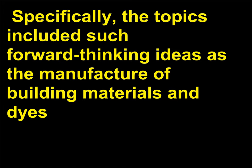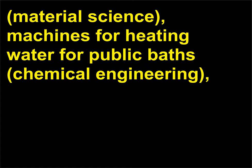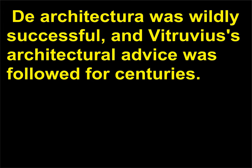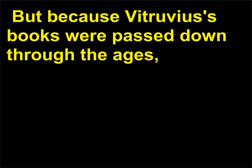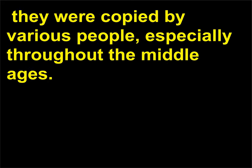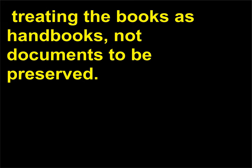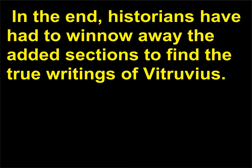Specifically, the topics included such forward-thinking ideas as the manufacture of building materials and dyes, material science, machines for heating water for public baths, chemical engineering, amplification in amphitheaters, acoustical engineering, and the design of roads and bridges — civil engineering. De Architectura was wildly successful, and Vitruvius's architectural advice was followed for centuries. But because the books were passed down through the ages and copied by various people, especially throughout the Middle Ages, many medieval engineers added information to the texts, treating the books as handbooks rather than documents to be preserved. In the end, historians have had to winnow away the added sections to find the true writings of Vitruvius.